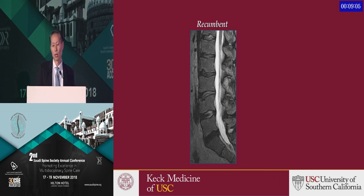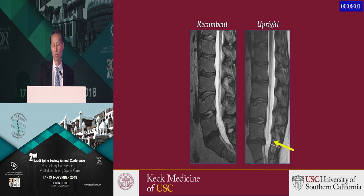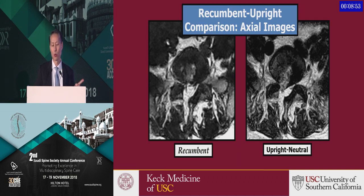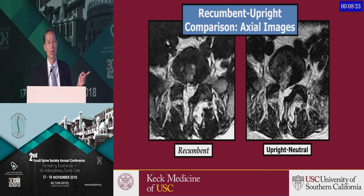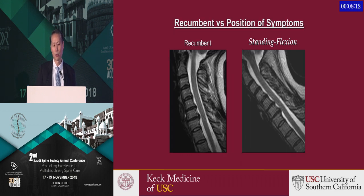Here's a patient whose recumbent MRI shows some disc bulges — nothing impressive. But when upright, there's a much more impressive disc herniation. On the axial cuts, the left side shows the normal recumbent MRI post-discectomy with minimal compression, but upright you can see a more impressive disc herniation. This patient had a discectomy with ongoing radicular pain. With the normal MRI you might say they're not a surgical candidate, but the upright MRI reveals pathology and opens the possibility of further surgical intervention.